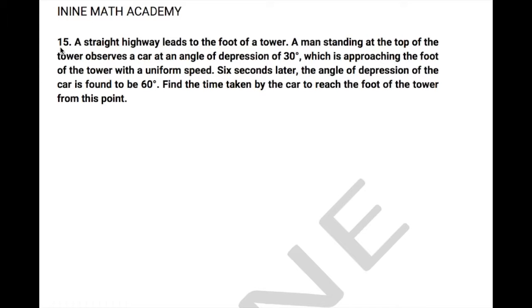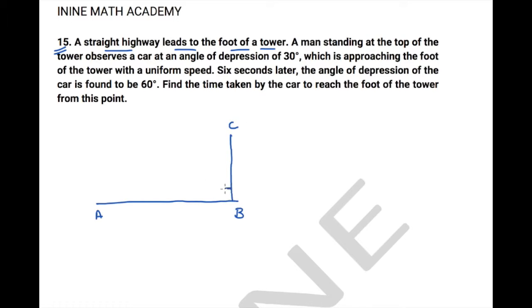Question number 15 is a lengthier question, so let us have patience to understand this. There is a straight highway which leads to the foot of a tower. There are two things here: a highway — let us call this as A and B — and a tower — let's call this as C. This is 90 degrees. A man standing at the top of the tower observes a car at an angle of depression of 30 degrees.